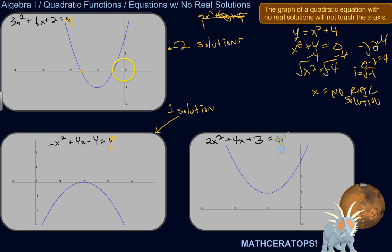3x squared plus 6x plus 2 equals y. Here's the graph of that, and it crosses the x-axis in two places. So there's two real solutions.